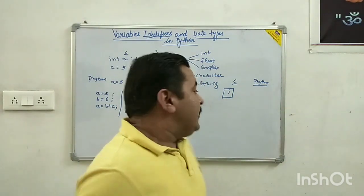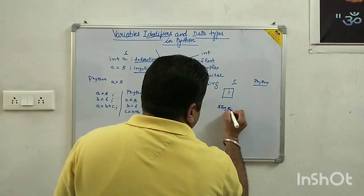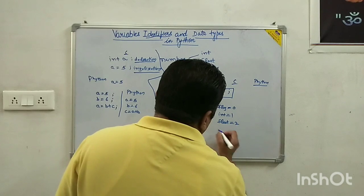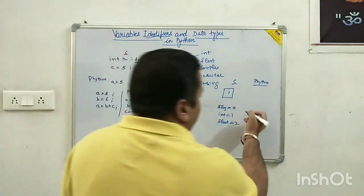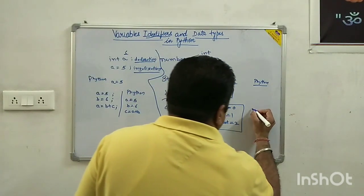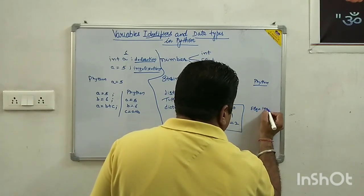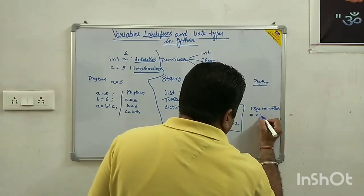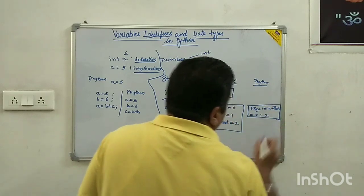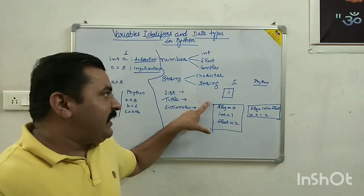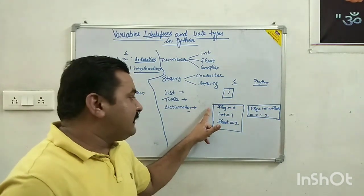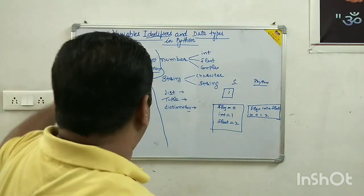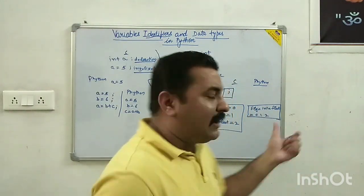Another difference: in Python, we can assign multiple variables in a single line. For example, instead of writing 'flag = 0', 'int = 1', 'float = 2' on separate lines in C, in Python we can write 'flag, int, float = 0, 1, 2' and execute three values in a single line. This is a key difference between C and Python.